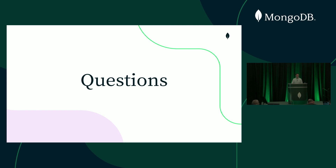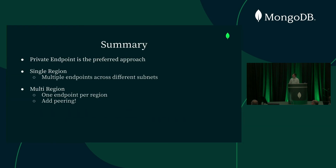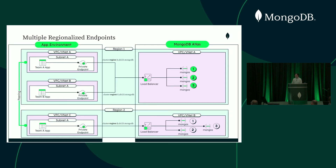Question: when you have a failover situation — especially in the second example where two regions are going into one — do you have performance issues? There shouldn't be a performance issue per se. It depends on the regions involved. If you're in US East 1 and your second region is halfway around the world, and you now have to access your MongoDB cluster from that region while your application is still in US East 1, there might be some additional latency from round-trip time. But for MongoDB-specific performance, it should be the same — Atlas uses the same hardware for each node, the same indexes — so by the time it gets there, it should be fine.